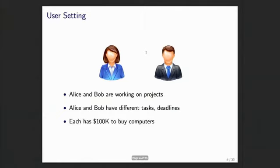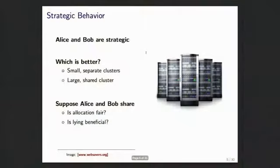Let's simplify the problem. Here's Alice and Bob, working on two different projects with different tasks and different deadlines, so they might be amenable to sharing. They both have $100,000 each to buy IT equipment. What should they do? Suppose Alice and Bob are strategic — they're going to ask: should we pool our resources together to buy a large shared cluster, or should we buy smaller separate machines and manage them on our own?